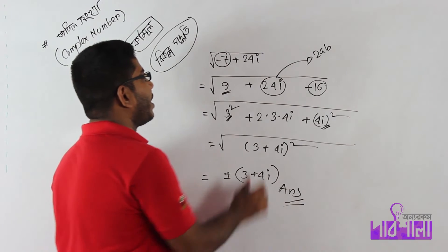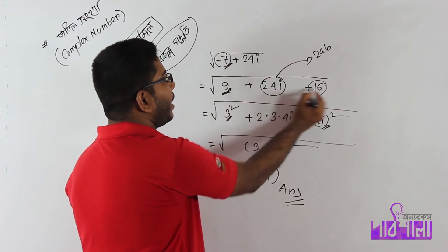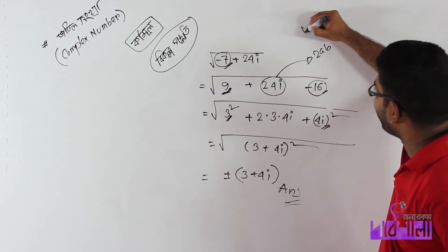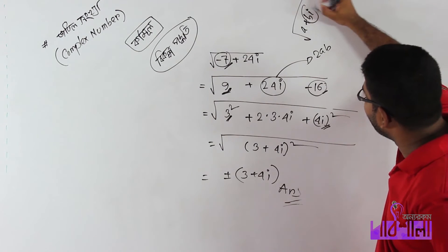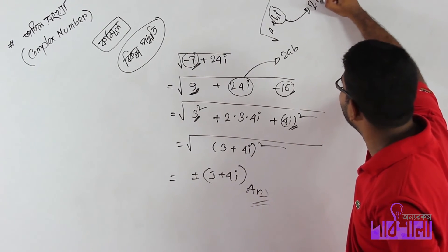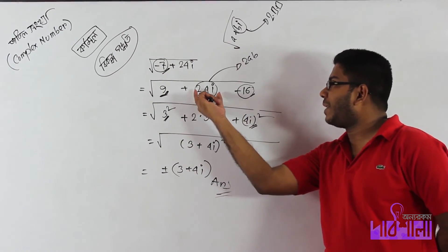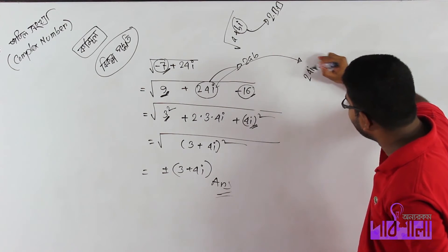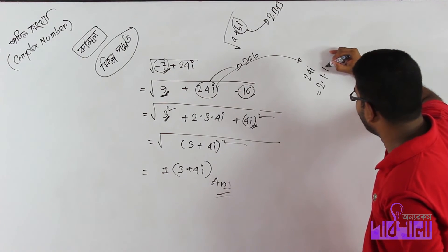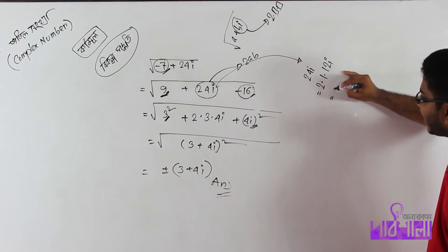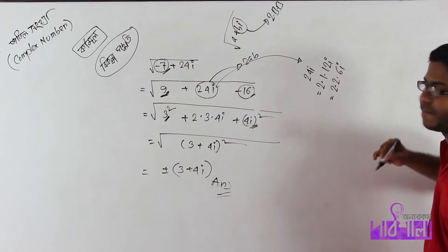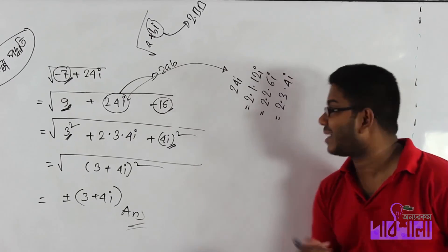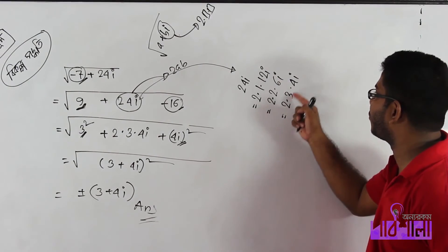Now for minus 7 minus 24i. Write it as a square minus 16, and minus 24i written as 2ab. So 2ab equals 2 times 1 times 12i, or 2 times 2 times 6i, or 2 times 3 times 4i. We use the 2ab format.